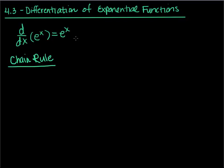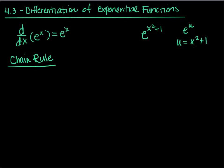The chain rule happens when we have a composition of functions. For example, if I take e and raise it to x squared plus 1, that's a composition of functions. I could think of this as e to the u, where u is x squared plus 1. So we need to do the chain rule when we take a derivative of something like this.